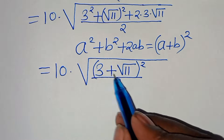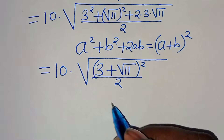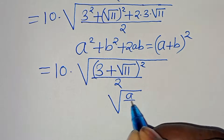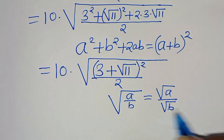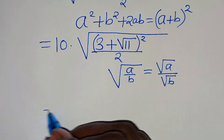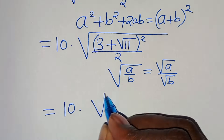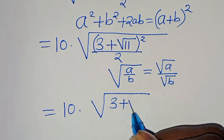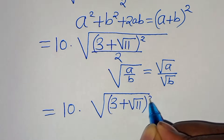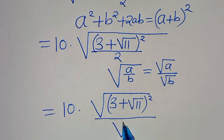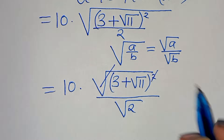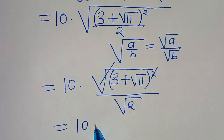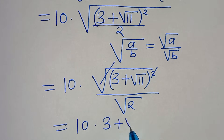The next step: the square root of the quantity 3 plus square root of 11 squared, over 2, is in the form of square root of a over b, which we can express as square root of a divided by square root of b. So we have 10 multiplied by the quantity 3 plus square root of 11 squared, divided by square root of 2. In the numerator we multiply by square root of 2, giving 10 times square root of 2 times the quantity 3 plus square root of 11, all divided by 2.